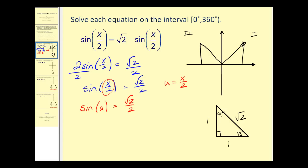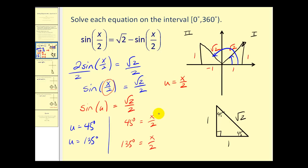Let's label all the sides. We have two possible angles for u: 45 degrees and 135 degrees. Now be careful — our solution needs to be in terms of x, not u. So we replace u with x over two and solve for x by multiplying both sides by two. Therefore x equals 90 degrees and x equals 270 degrees.